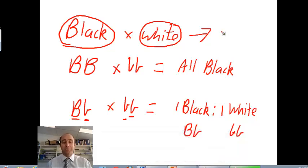If you ended up with a hundred black sheep, you could almost say, yeah, it must be very likely that it's homozygous dominant.